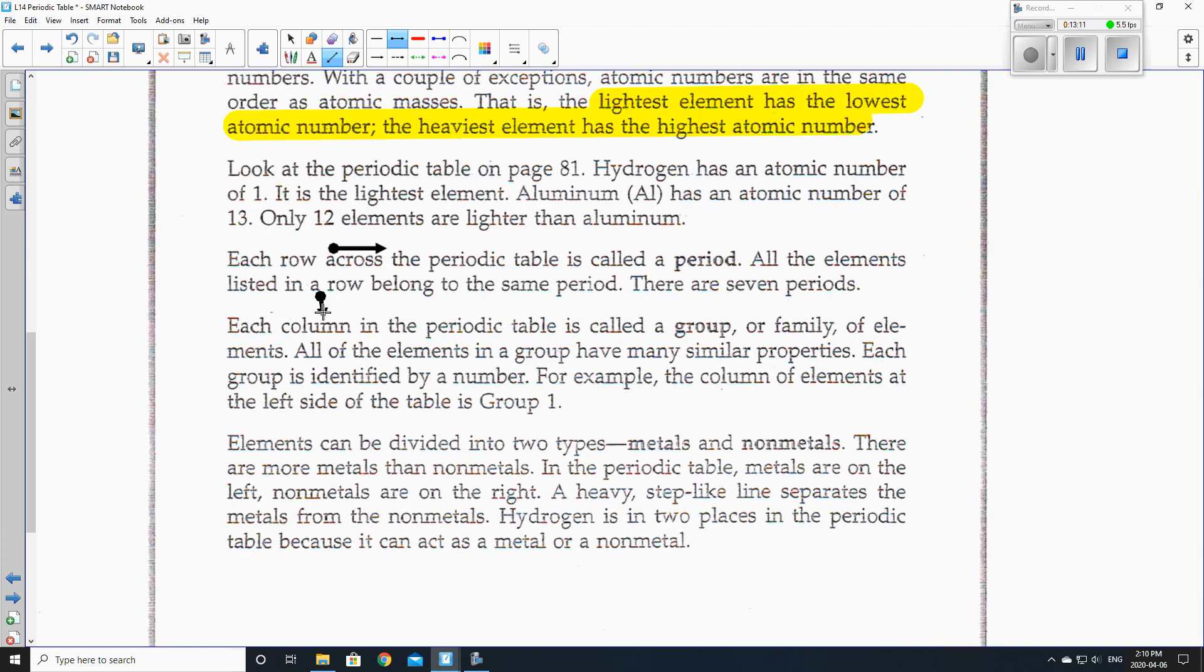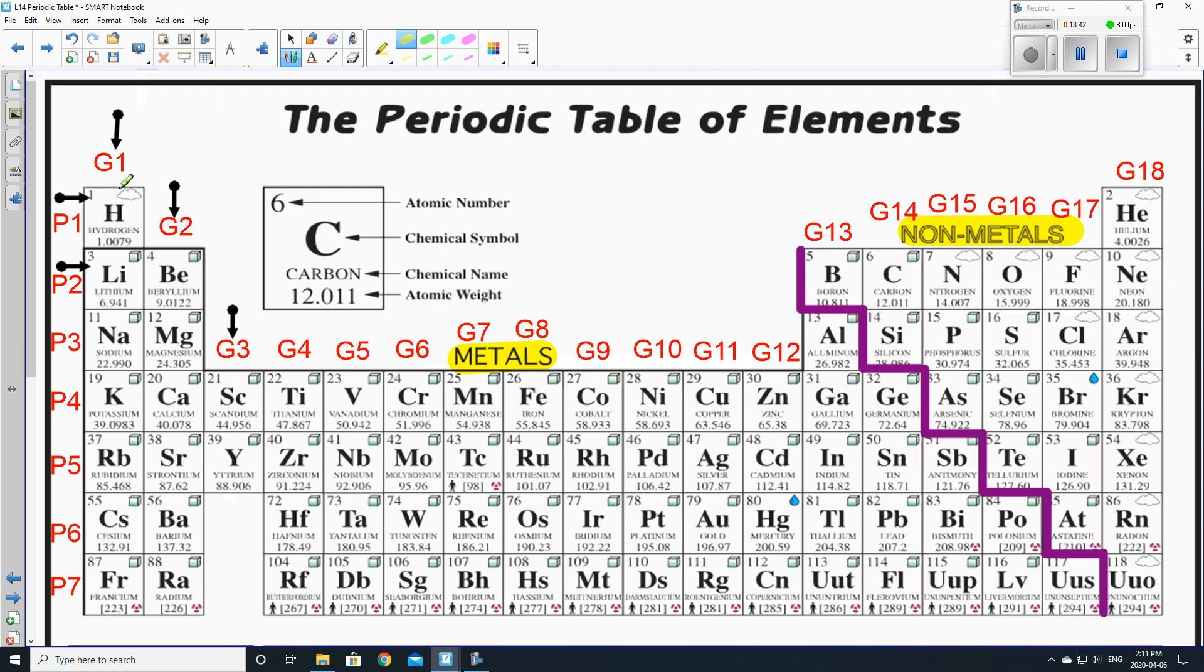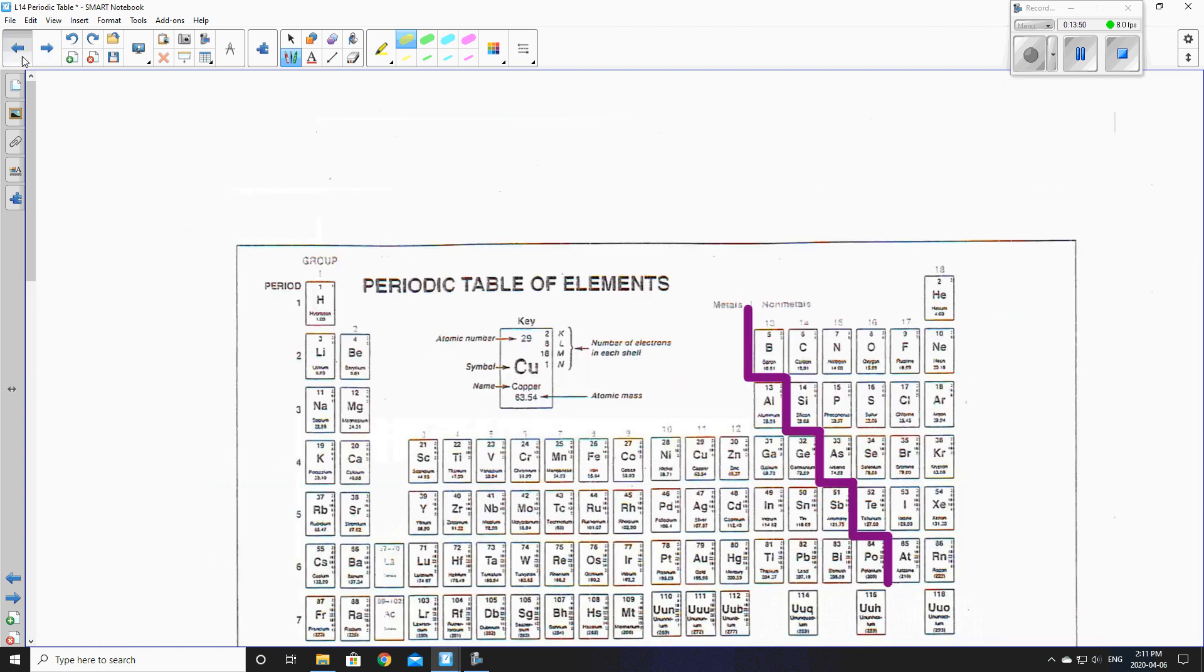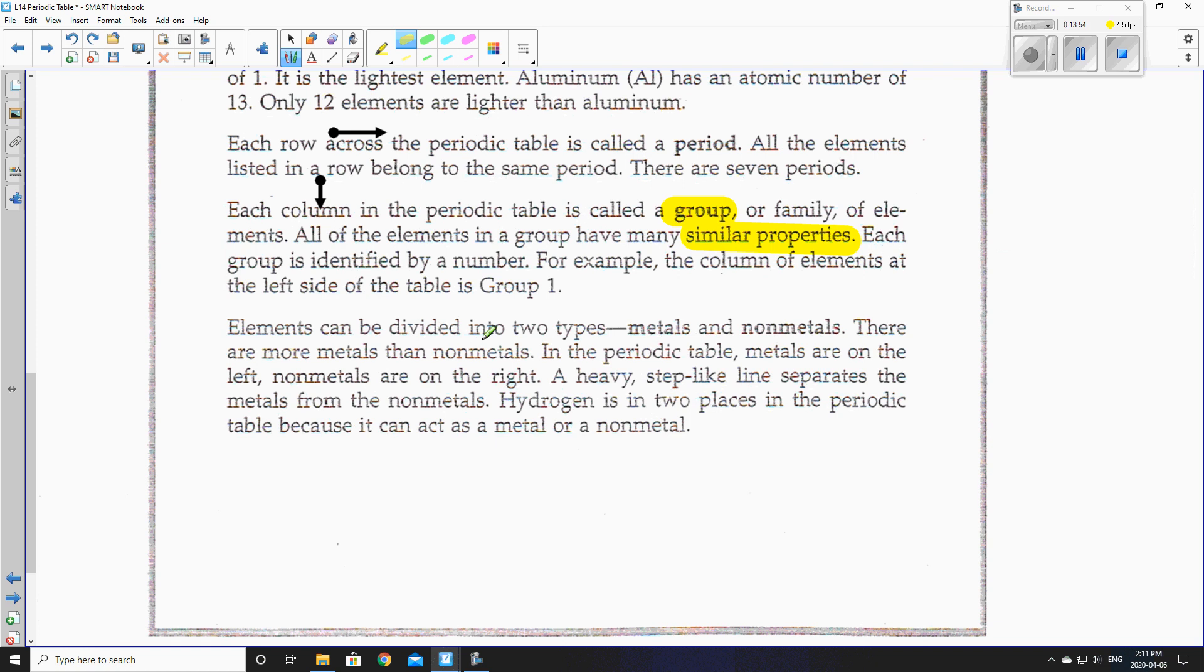Each column, so columns go up and down. Each column in the periodic table is called a group, or family of elements. All of the elements in a group have many similar properties. When they are in a group together, they have similar properties. Each group is identified by a number. For example, the column of elements at the left side of the table is group 1. So what are they referring to? Right over here, the left side of the table, here is group 1. And this whole column is group 1.